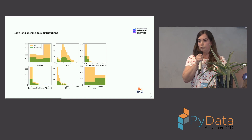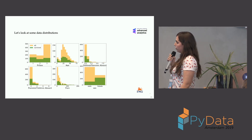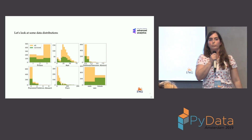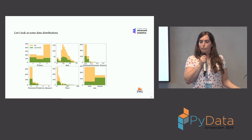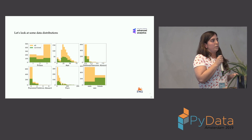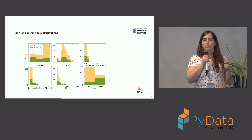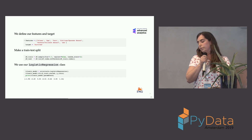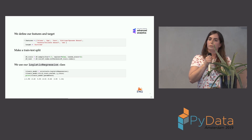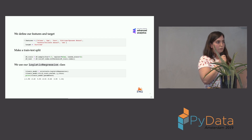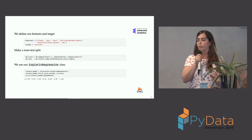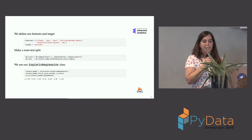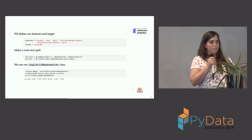As data scientists we start by looking at data distributions to get a feel for the features. In orange we see all passengers, in green those who survived. It seems women survived more often, whereas third-class passengers did not. We train a model selecting features like gender and fare, with survival as target. We split into train and test sets, then use our own package — we call it error_tools — with a logistic regression implementation to fit the model.